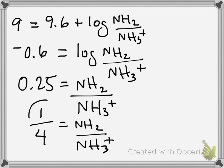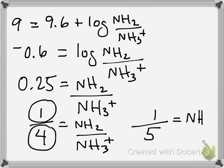So if there's one deprotonated version for every four protonated versions, you'd think of out of every five, one is going to be in the NH2 form, and out of every five, four of them will be in the NH3 form.